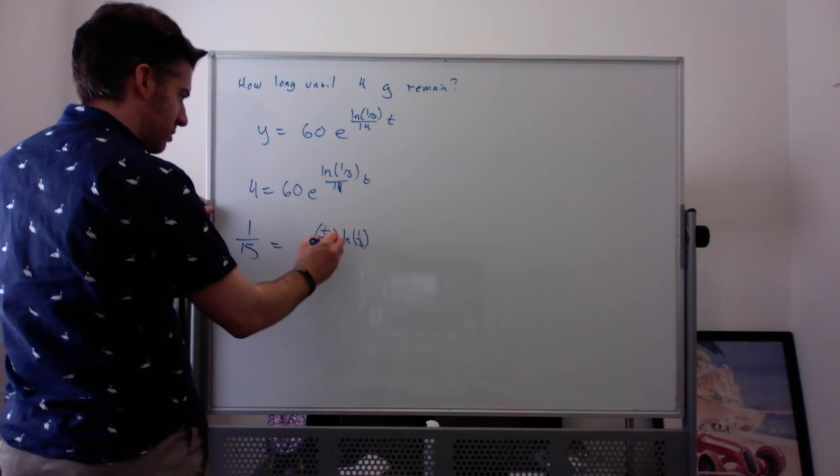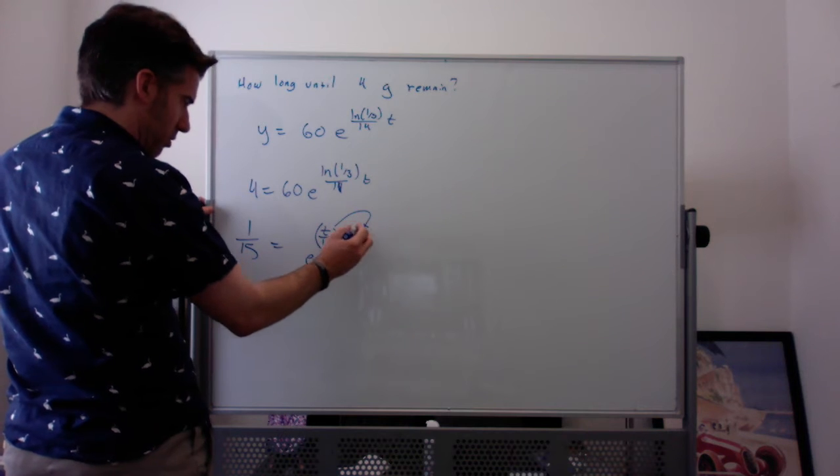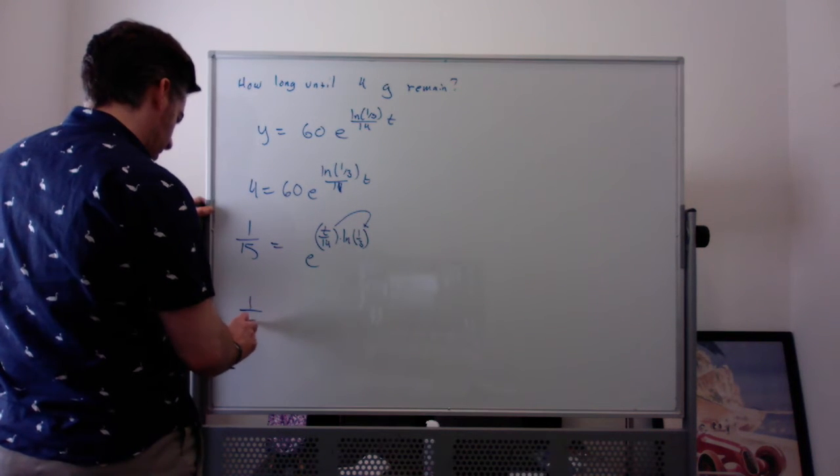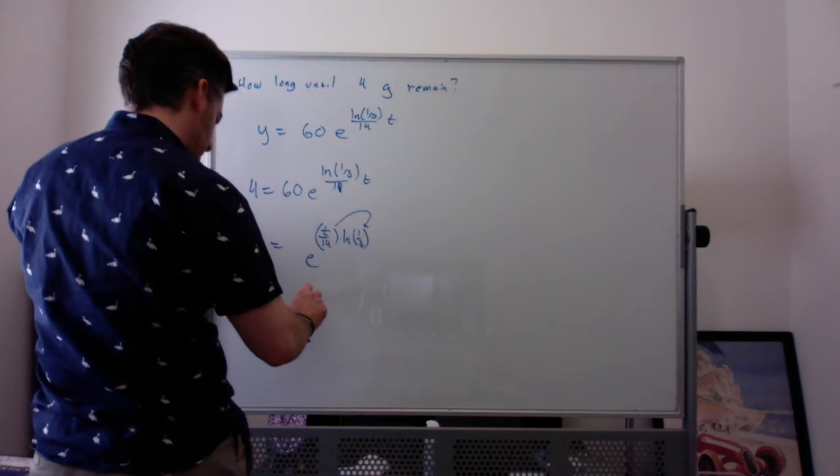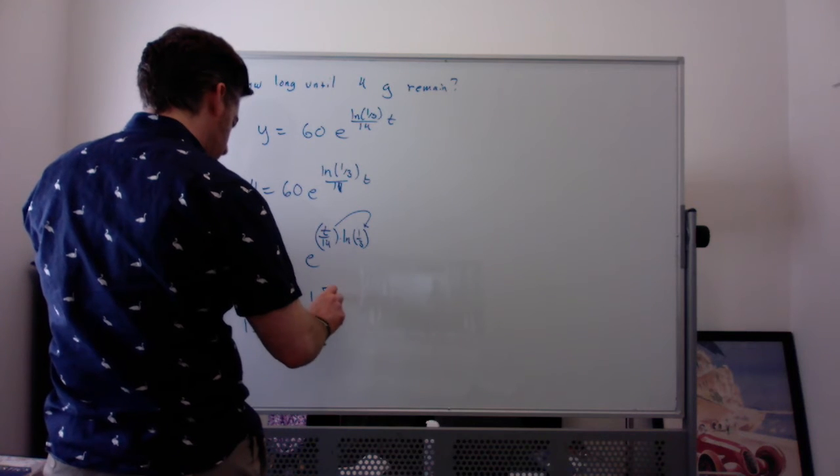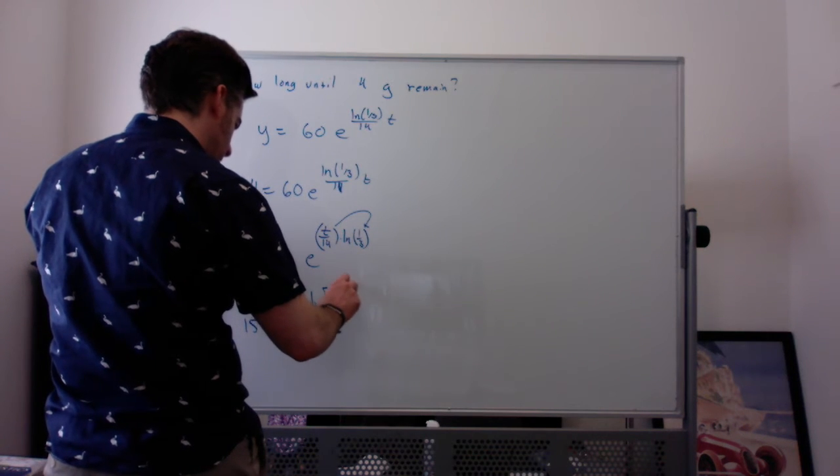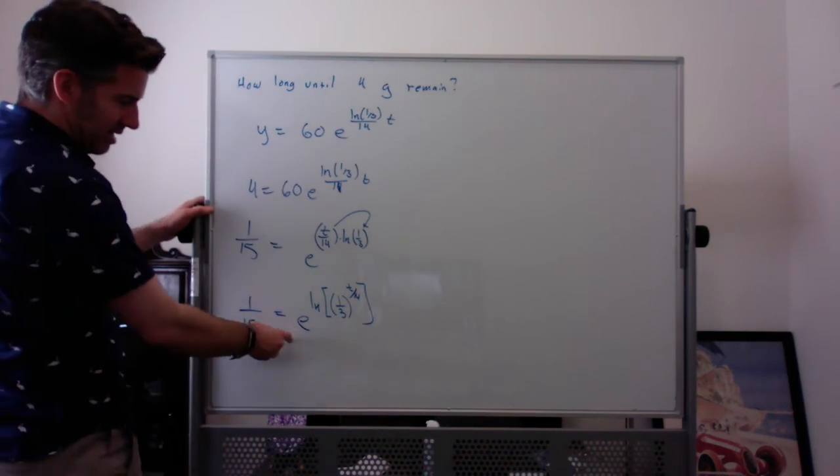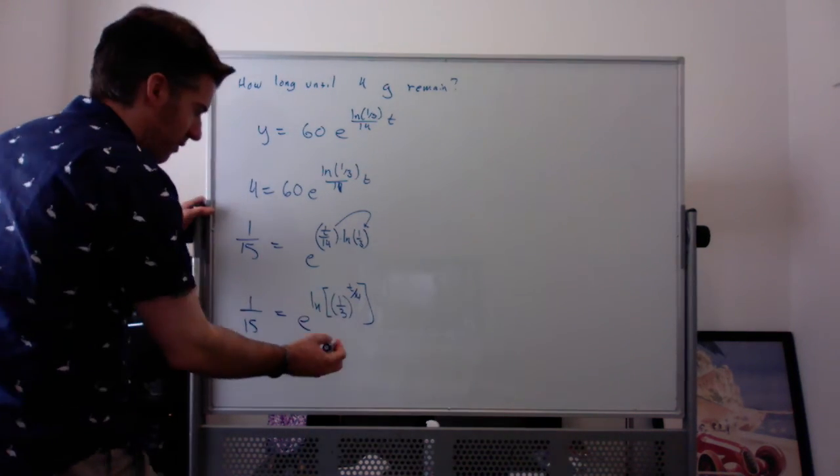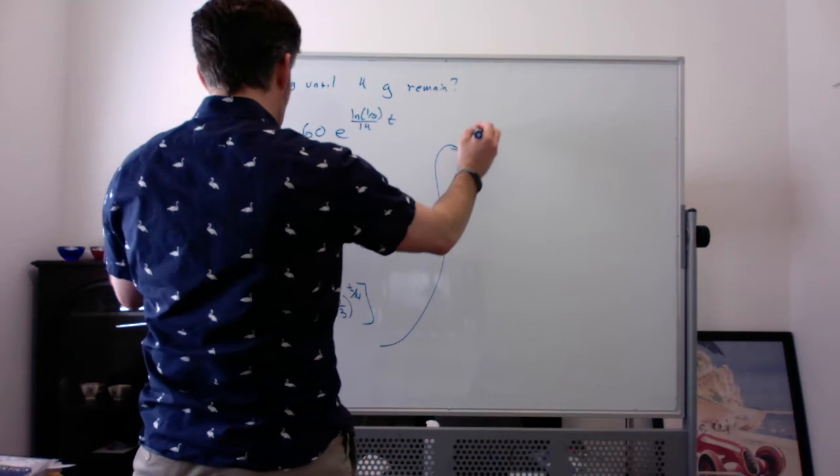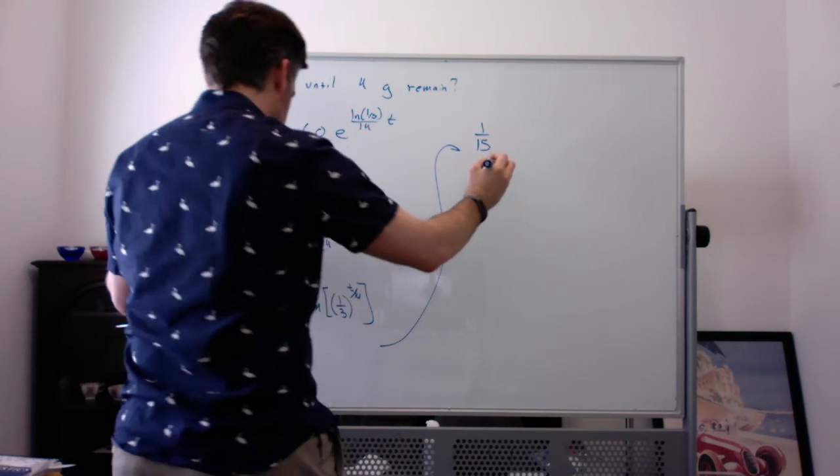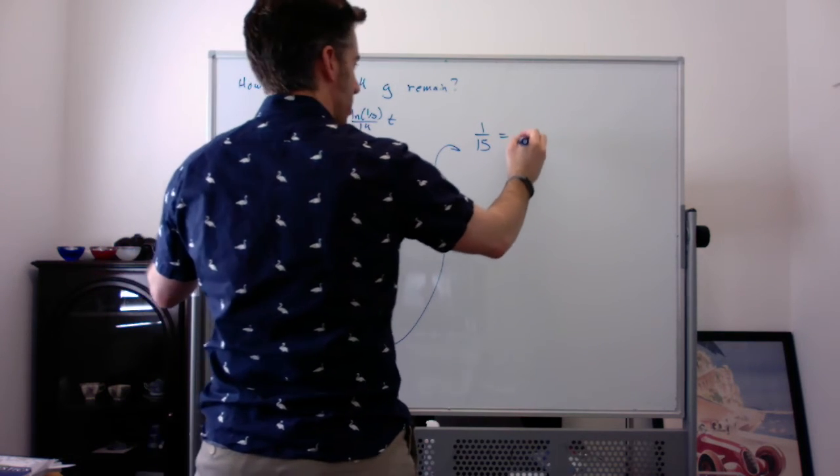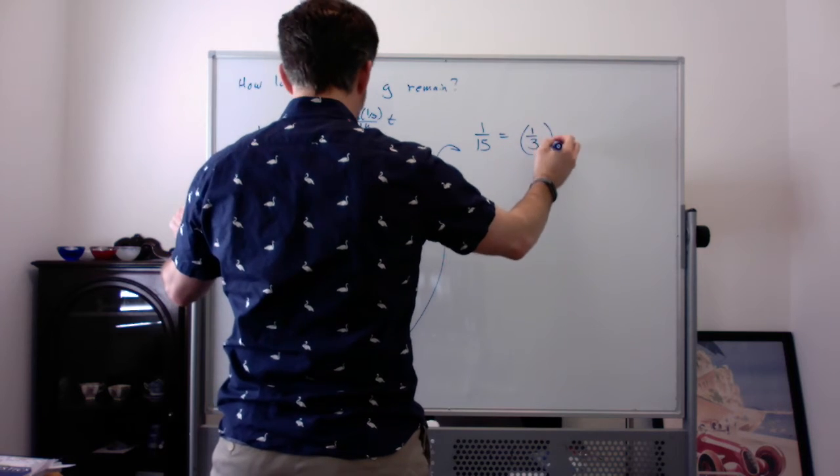And then this coefficient of the natural log would come up as the power. So I can actually write it as e^(ln(1/3)^(t/14)). And the reason you might do that is to then e to the natural log of some stuff is just the stuff. So I can say this is 1/15 equal to (1/3)^(t/14).